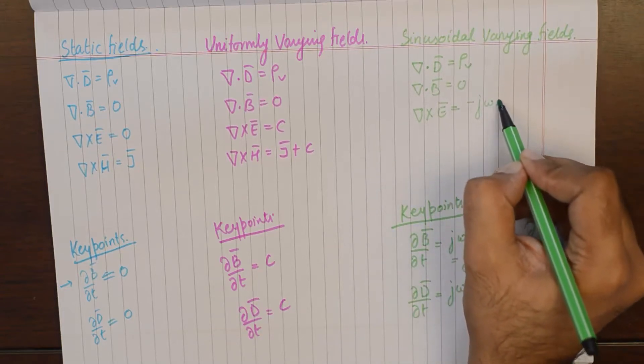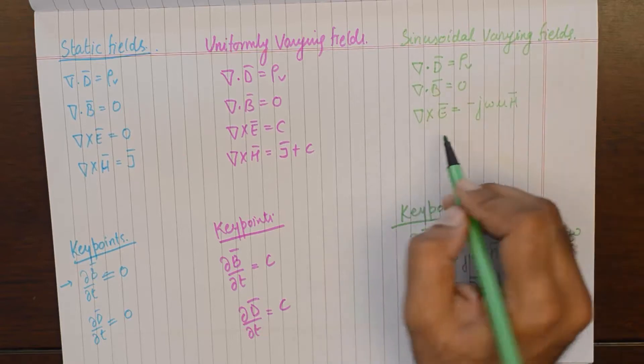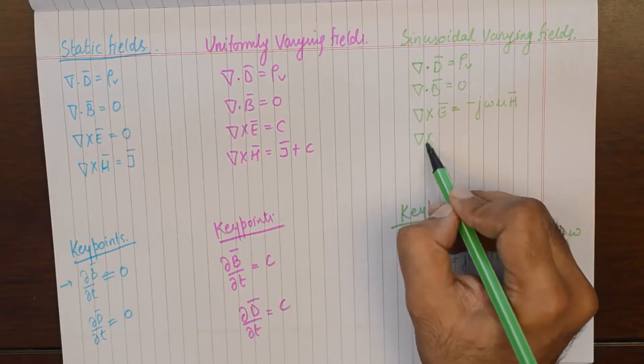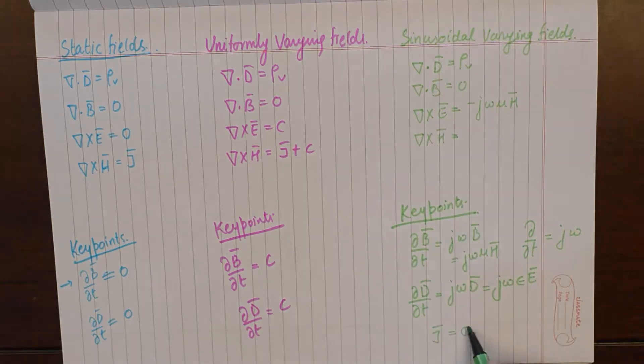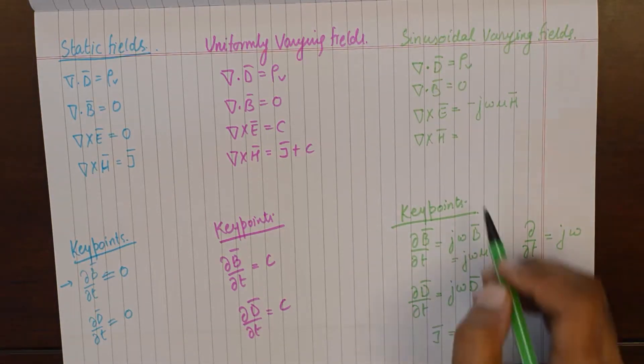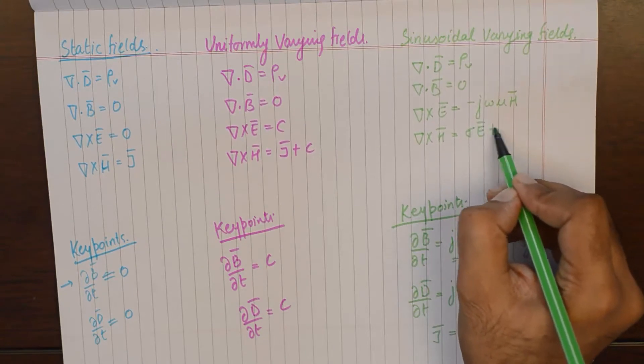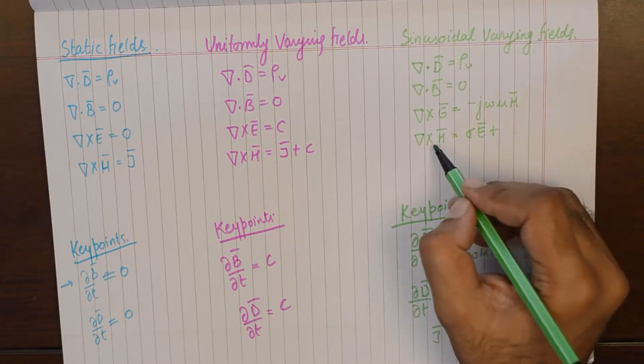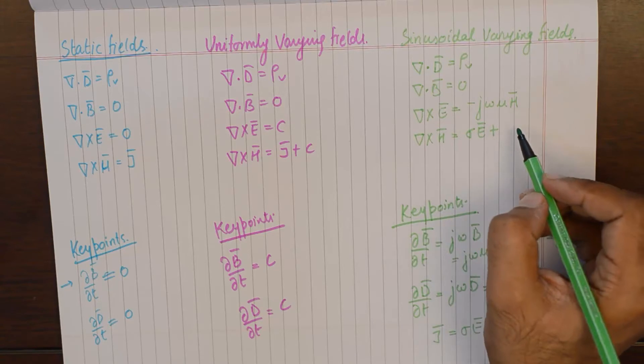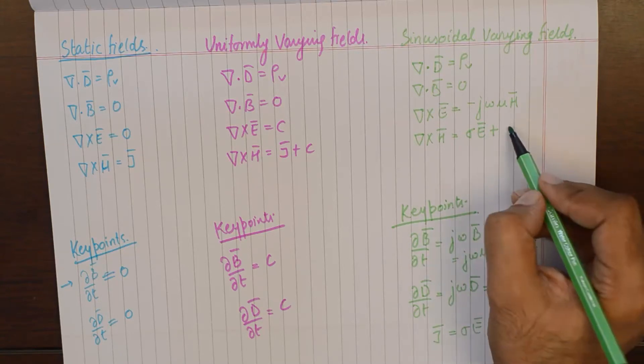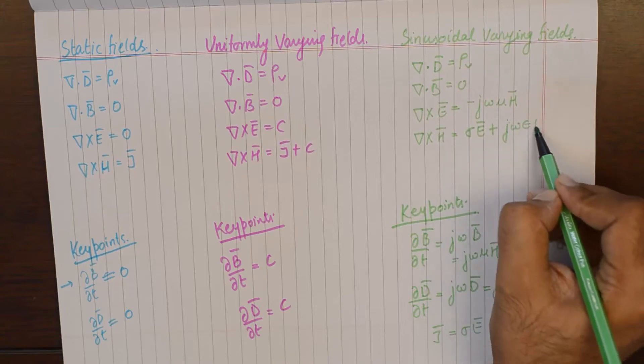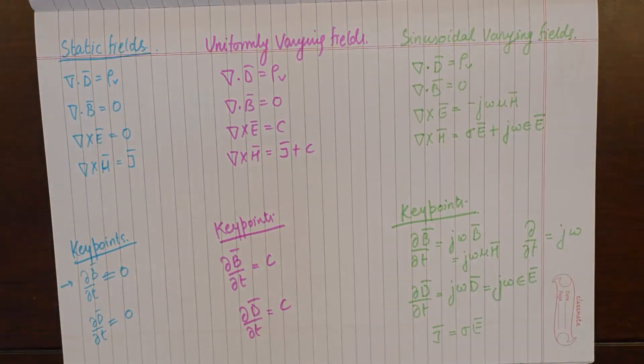The Maxwell equations take up this form: minus jωμH. And we could also substitute J as σE, so that on the right hand side of the fourth equation, we should have everything in terms of E, which is electric field intensity.